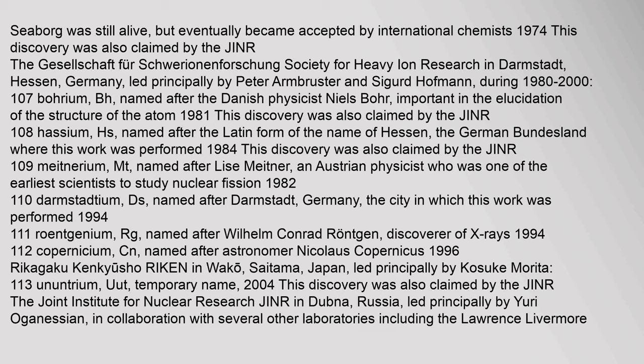The Gesellschaft für Schwerionenforschung, Society for Heavy Ion Research, in Darmstadt, Hessen, Germany, led principally by Peter Armbruster and Sigurd Hoffmann during 1980–2000, discovered: element 107, Bohrium (Bh), named after the Danish physicist Niels Bohr, important in the elucidation of the structure of the atom, 1981 — also claimed by the JINR. Element 108, Hassium (Hs), named after the Latin form of the name of Hessen, the German Bundesland where this work was performed, 1984 — also claimed by the JINR.